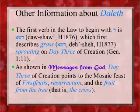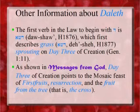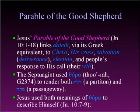Some miscellaneous information about daleth: the first verb in the law to begin with the letter daleth is the word dasha, which first describes the grass — the noun desha — sprouting on day three of creation. So once again we have this connection between the fourth letter and something to do with the number three. Day three of creation points to the Mosaic feast of first fruits, resurrection, and the fruit from the tree — and of course that tree is the cross.